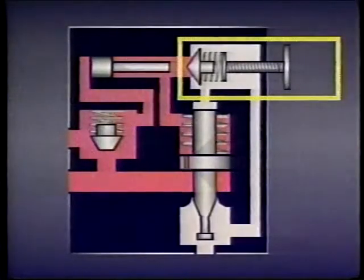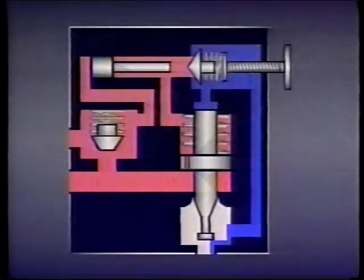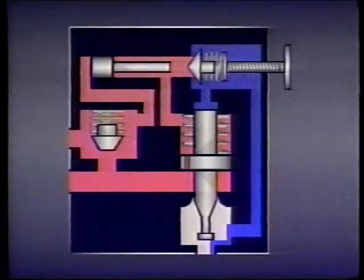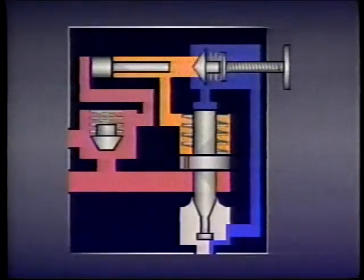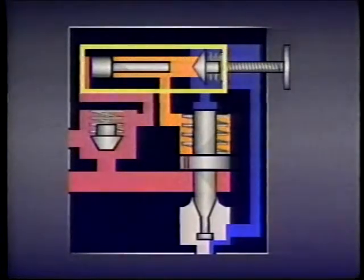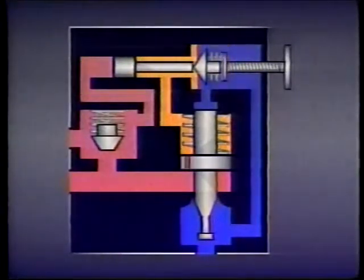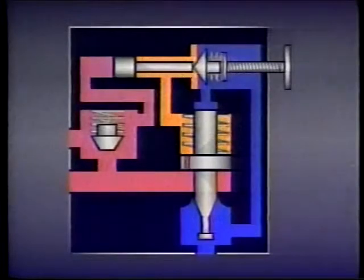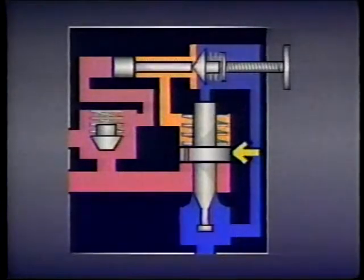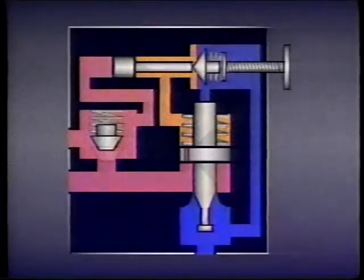When that happens, the dart unseats slightly, allowing some fluid to flow past the dart and return to tank — shown as blue. The flow past the dart reduces pressure on one side of the differential piston — shown as orange. Since there is less pressure on one side of the piston, it shifts in that direction, forcing the dart completely off its seat. With the dart forced off its seat, pressure on the spring side of the main valve spool drops — shown in orange — and the main valve spool shifts, opening a passage from the pump directly to tank.